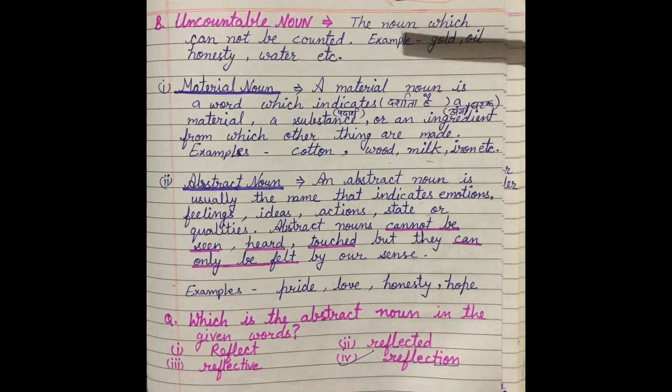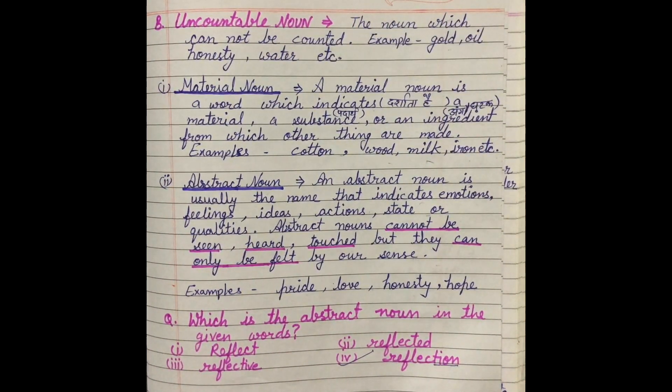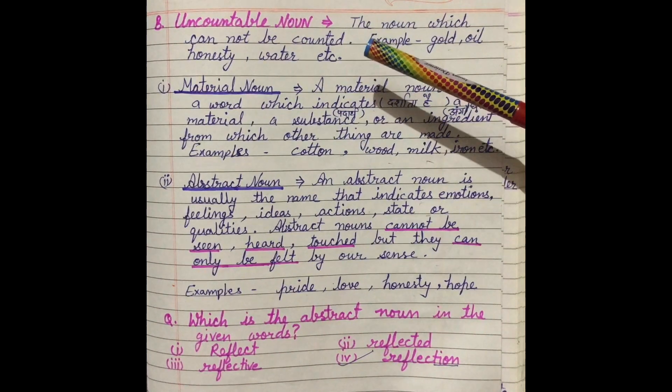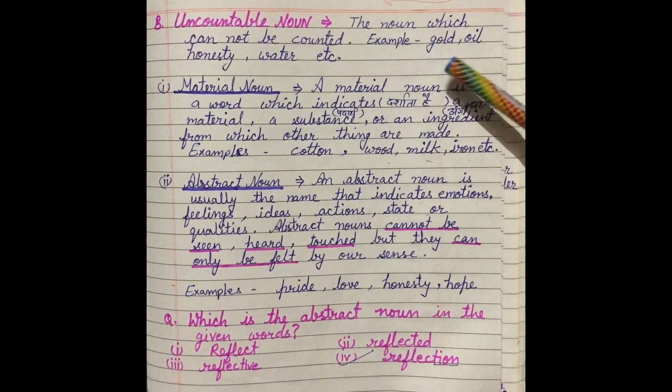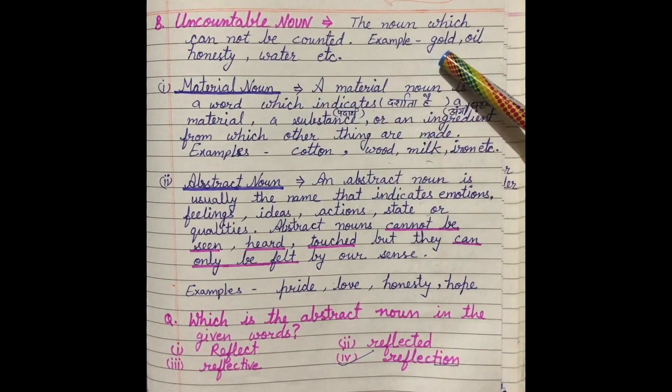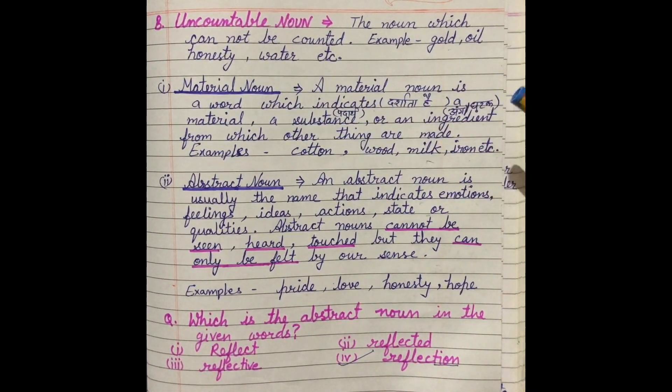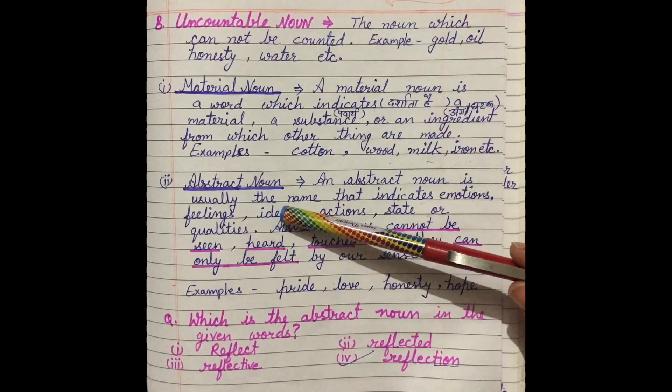Now uncountable noun. The noun which cannot be counted. Jis noun ko hum count nahin kar sakte, that is called uncountable noun. For example, gold, oil, honesty, water. We can measure gold and oil, but we cannot count. In uncountable noun, we include material noun and abstract noun.